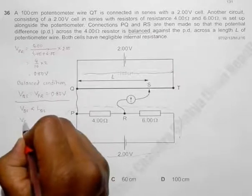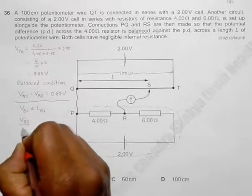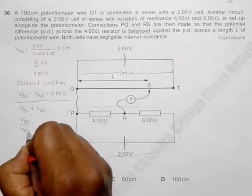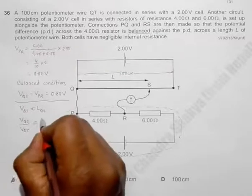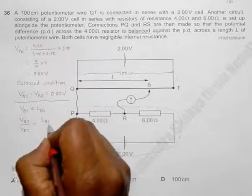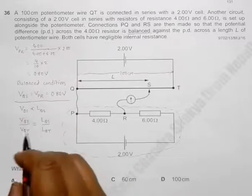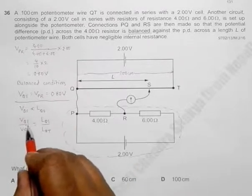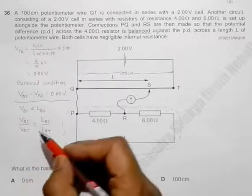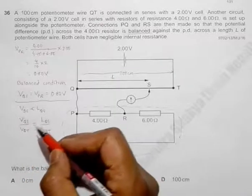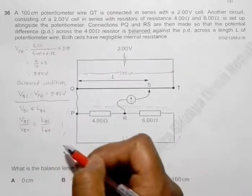So that means VQS by VQT should be equal to LQS by LQT. So since they are proportional, we must have the ratio of the PD should be equal to the ratios of the lengths.